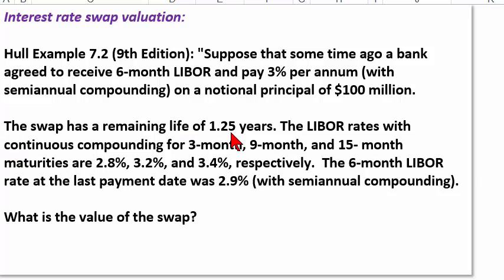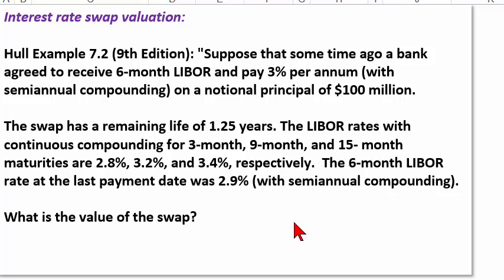The swap has a remaining life of 1.25 years or 15 months, and we're given LIBOR rates with continuous compounding at 2.8%, 3.2%, and 3.4%. We're also told the six-month LIBOR at the last payment date was 2.9%. In a vanilla interest rate swap, the prevailing LIBOR at the last payment determines the upcoming floating rate payment. So this tells us that the next floating rate payment is 2.9%, and it's the only future floating rate payment that we know.